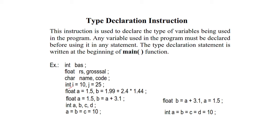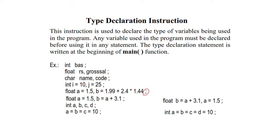One important thing to know is that we can declare a number of variables in the same statement, and we can also define the variable at the same time. For example, i is assigned value 10 and j is assigned value 25. Likewise, for float, we can declare: float a = 1.5, and b can be written as an expression like b = 1.99 + 2.4 * 1.44, followed by a semicolon.